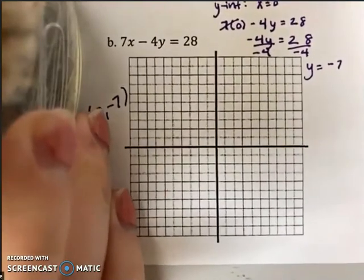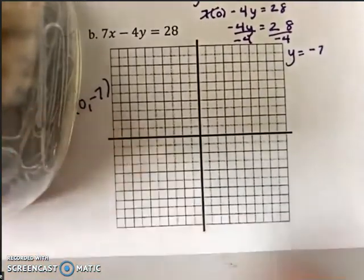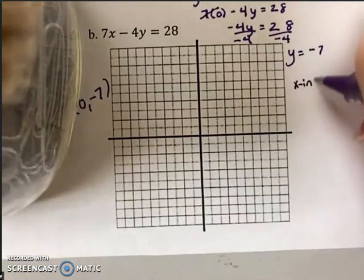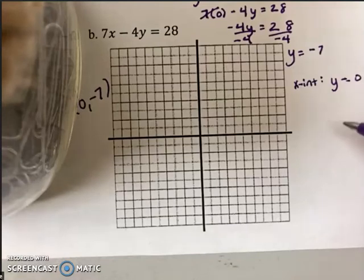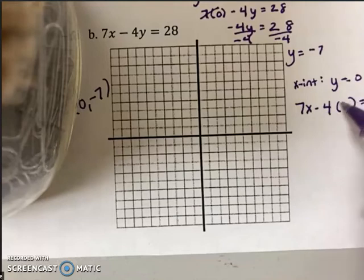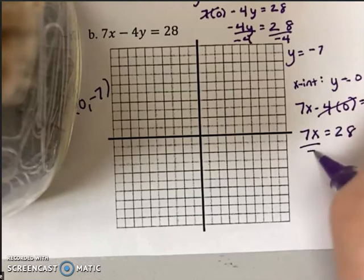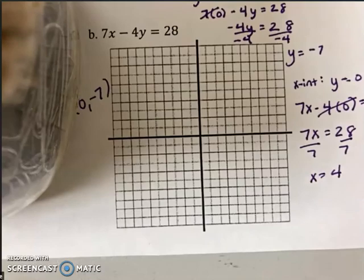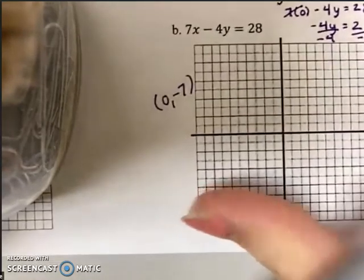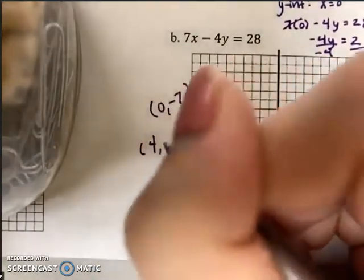Okay, let's push this over so you can see my work. Now I need to find the x-intercept, and in order to do this, I have to let y equal 0, which means I'm going to have 7x minus 4 times 0 equals 28. All right, well, 4 times 0 is 0, so that's gone. I'm left with 7x equals 28. Divide each side by 7. Yeah, x equals 4. So the second point I have, my x-intercept, has an x value of 4 and a y value of 0.